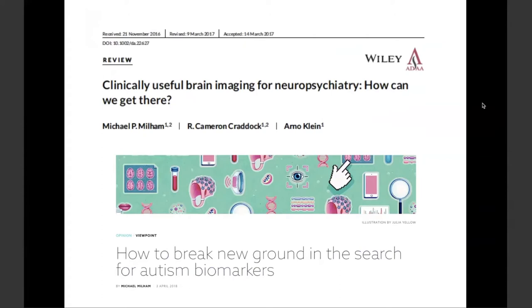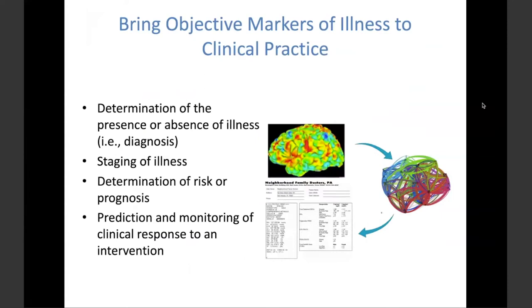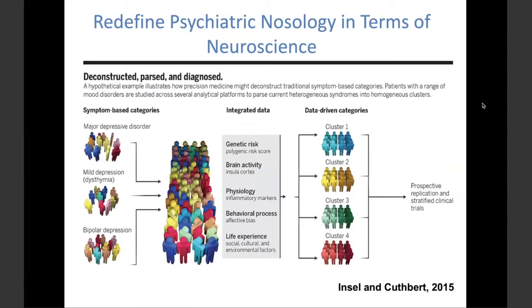I'm going to start with the promises - what are we after? As a combination of child and adolescent psychiatrist and neuroimaging researcher, it's the same thing folks have been after for decades: how do you bring about objective markers of illness to help guide practice, whether it be diagnosis, treatment decision-making, assessments of prognosis, or eventually prevention? That remains the holy grail. Over the last several years, you've seen the emergence of RDoC and the idea that we need to redefine psychiatric nosology in terms of neuroscience if we really want to reach these goals.